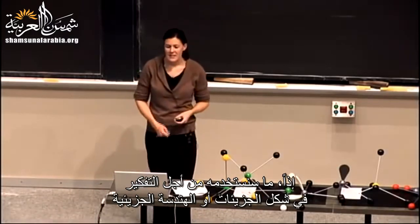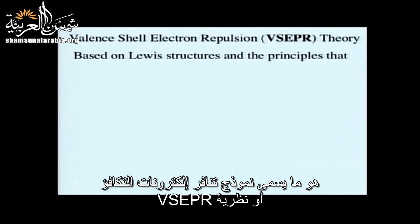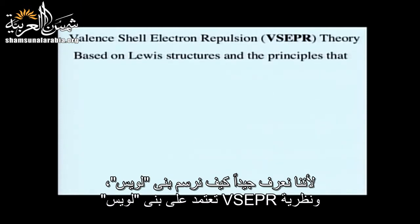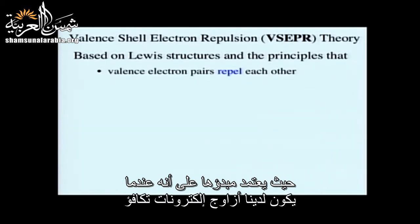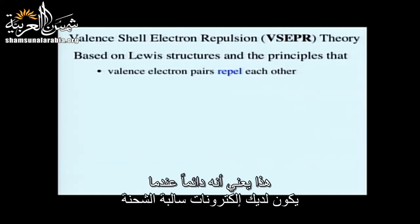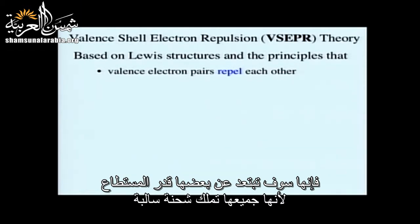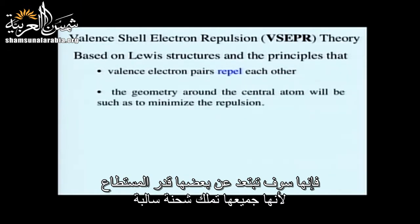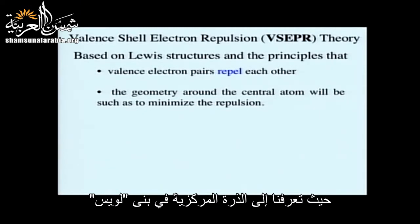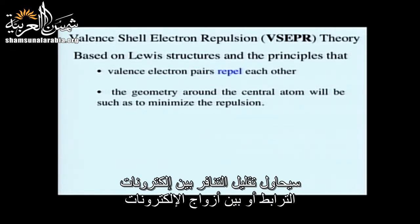To think about molecular shape, we use valence shell electron pair repulsion, or VSEPR theory. This is convenient because we are masters of drawing Lewis structures, and VSEPR is based on Lewis structures plus the principle that valence electron pairs repel each other. The geometry around the central atom minimizes repulsion between bonding electrons and electron pairs.